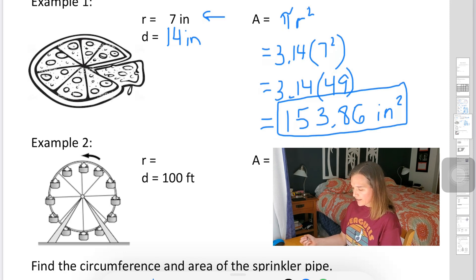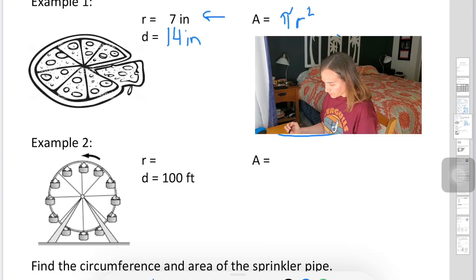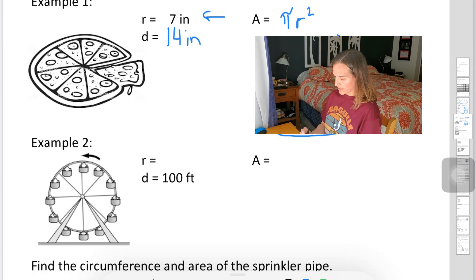All right, second example. Now we have a Ferris wheel. And just a little vocabulary word that gets used often with these is revolution. To have one revolution means to go one time completely around the circle.